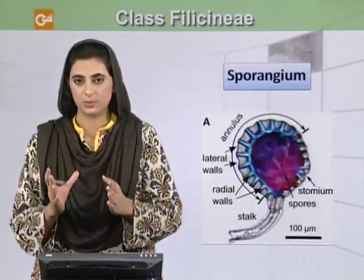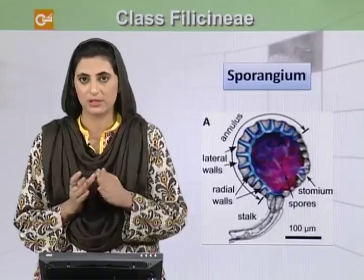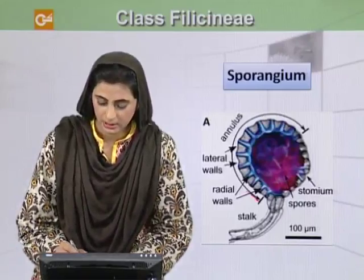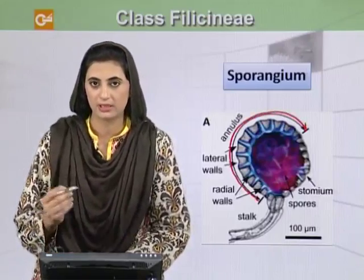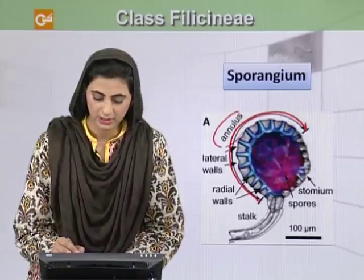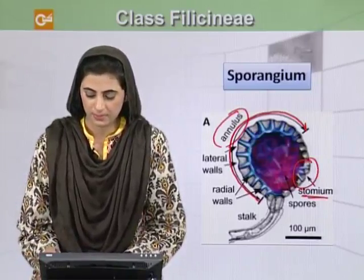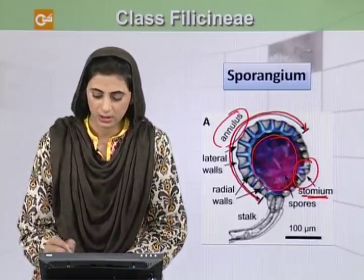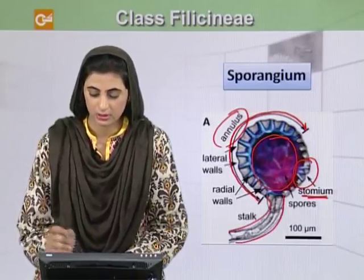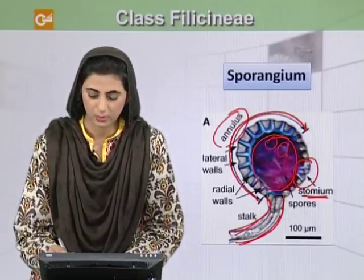If we examine a single sporangium, it has a complex structure. The outer wall is also called the capsular wall. It consists of a portion called the annulus and another portion called the stomium. Inside this wall there are spores, and the sporangium is borne on a stalk.